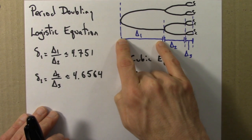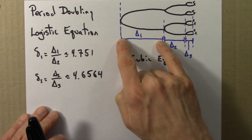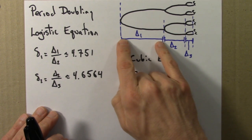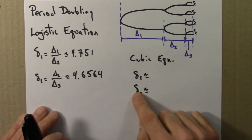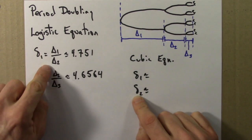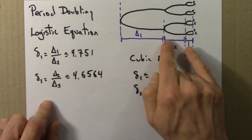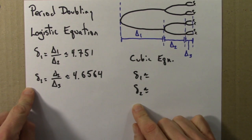Capital delta is the range of parameter values for which we have period 2. Delta 2 is the next range, delta 3 is the next range, and we define these ratios: this divided by this, this divided by that, to be these little deltas.